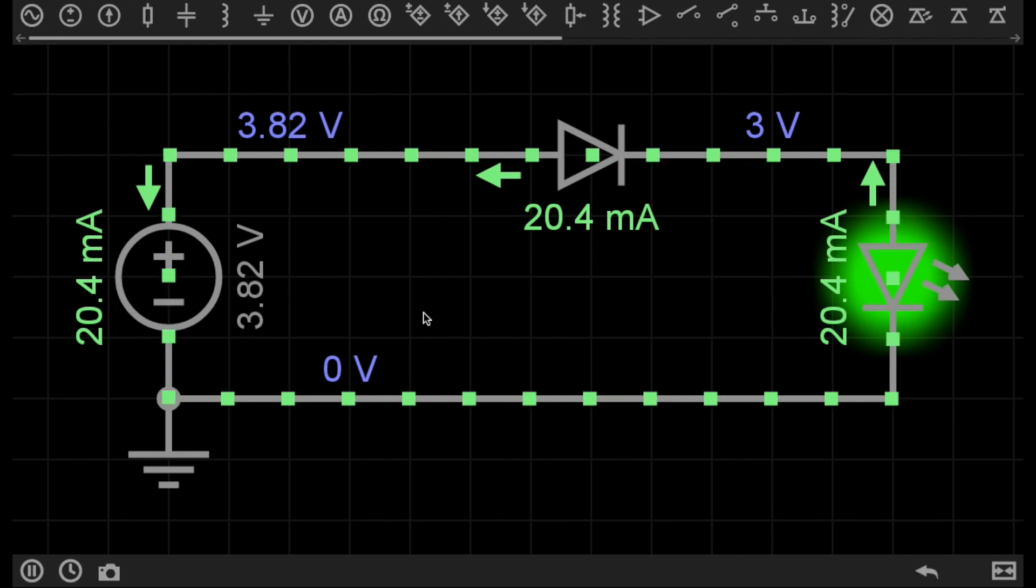So the example that I have here, we've got an LED, which is a type of diode. It's a diode that emits light, but the diode we're concerned about is this one here. This is not a light emitting diode, it is just a diode.